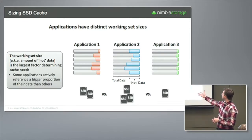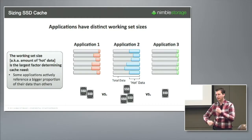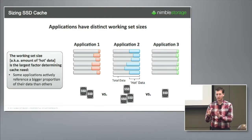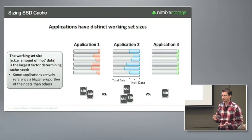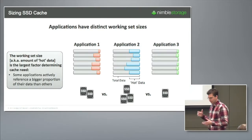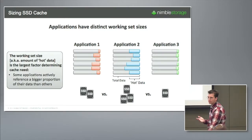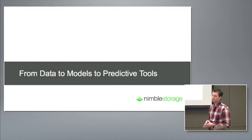Application one versus application two, for example, may have a very large fraction of data going into churn on a daily basis, and so that's going to need a larger allocation of cache than application three, which has very small working sets relative to the amount of data available. We quantify that and understand how it varies from individual application instances across the install base, and that element is also key in the sizing we do.